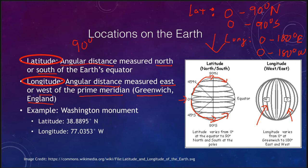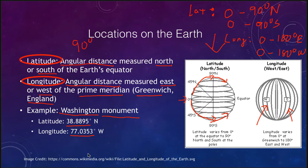An example of these coordinates: the Washington Monument is at a latitude of 38.8895 degrees north, and a longitude of 77.0353 degrees west. So that tells us it's nearly 40 degrees north of the equator, and about 77 degrees west of the prime meridian. The more decimal points we know, the more accurately we know those values.